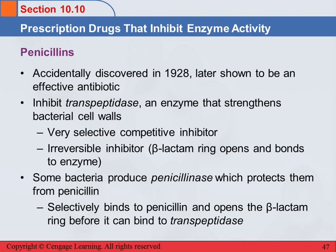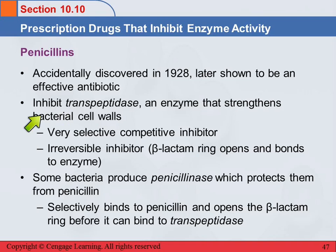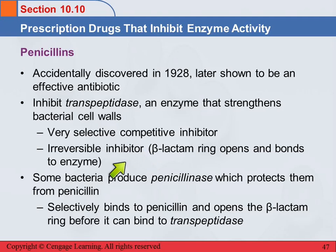Another group of antibiotics are the penicillins. These were accidentally discovered in 1928, and it wasn't until later that they were shown to be effective antibiotics. They work by inhibiting transpeptidases, which are enzymes that strengthen bacterial cell walls. The penicillins act as very selective, competitive inhibitors, and they are also irreversible inhibitors. What happens is a beta-lactam ring opens up and bonds to the enzyme permanently, completely disabling it.